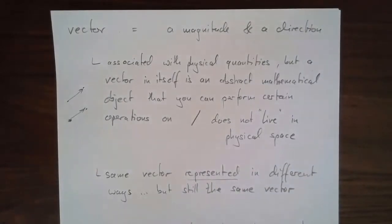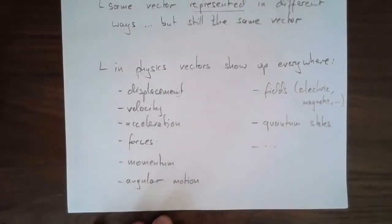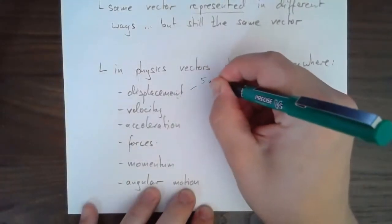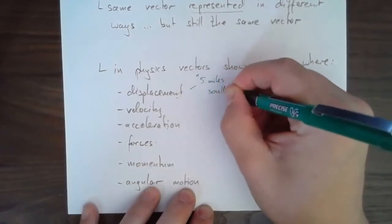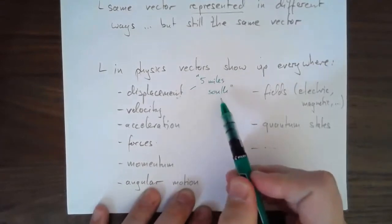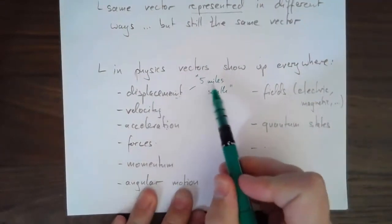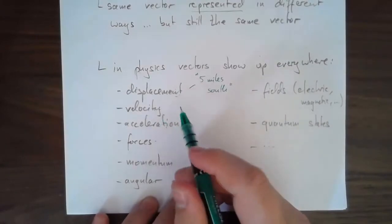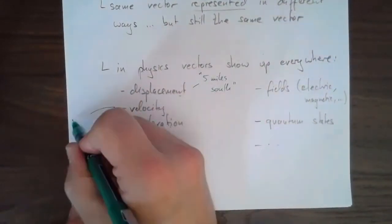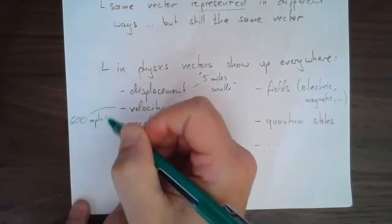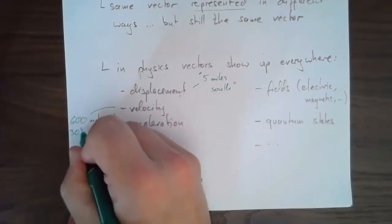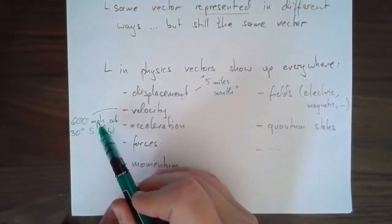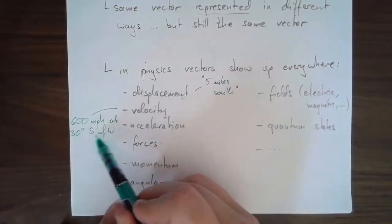Let's give some examples from this list. Displacement: I could say five miles south — that's a vector specified in words, giving a magnitude and a direction. For velocity, I might say 600 miles per hour at 30 degrees south of west — maybe the velocity vector of a plane. 600 miles per hour is the speed, that's the magnitude, and then the direction is given by the angle.